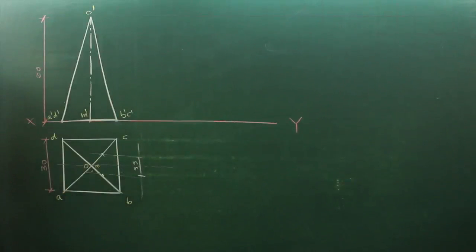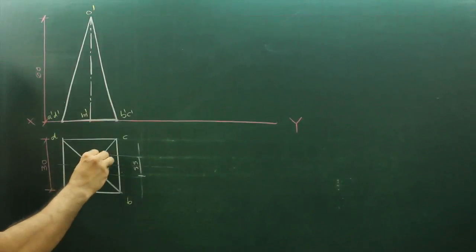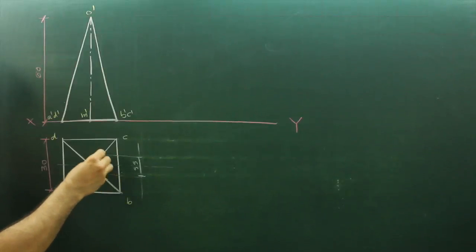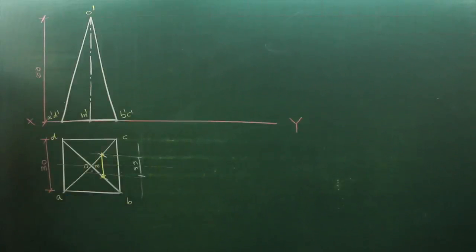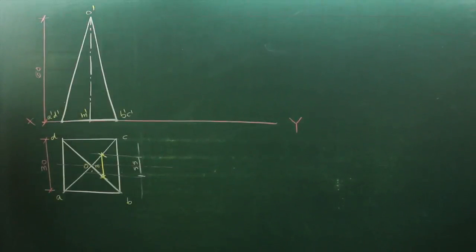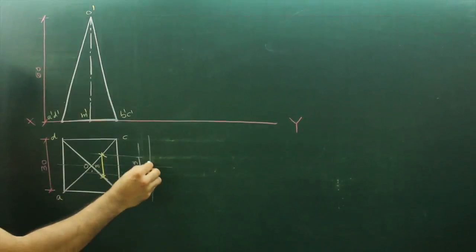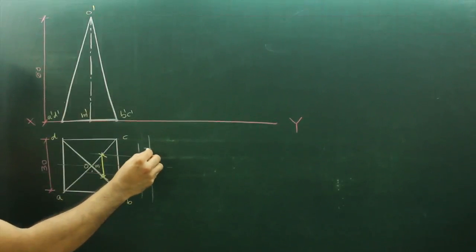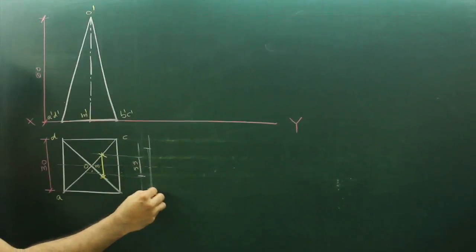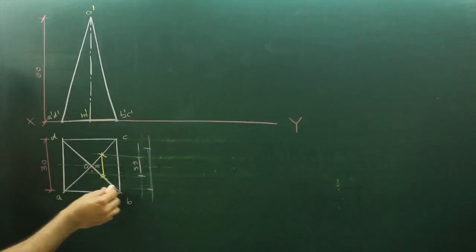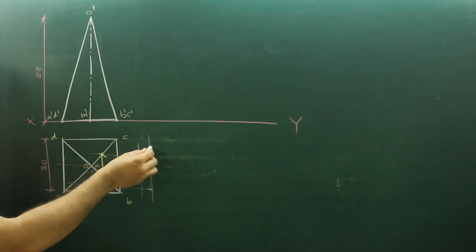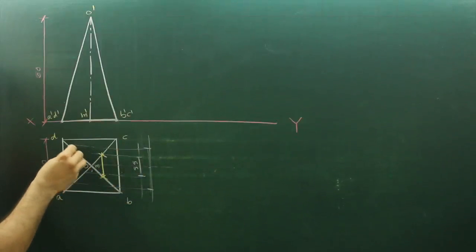Wherever the cut line intersects, we want two points for the 10mm side. Same way, for 25mm I will draw one more line — I will take 12.5mm up and 12.5mm down and extend it the same way.